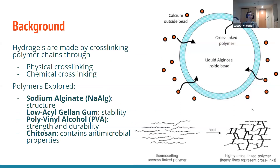Hydrogels are made by crosslinking polymer chains and can be done in two different ways: chemical or physical. Chemical crosslinking uses covalent bonds and cannot be undone, whereas physical crosslinking uses any method other than covalent bonds and can be reversed. For example, gellan gum is a thermogel, so it crosslinks when heated or cooled to specific temperatures, but within a certain range it will remain a solution, so it uses physical crosslinking.